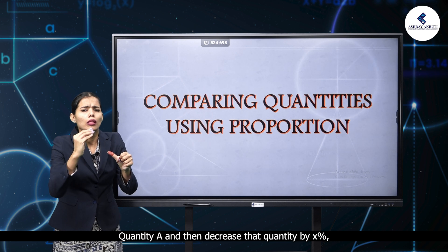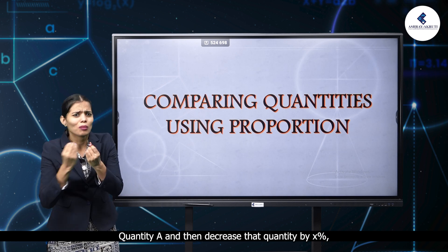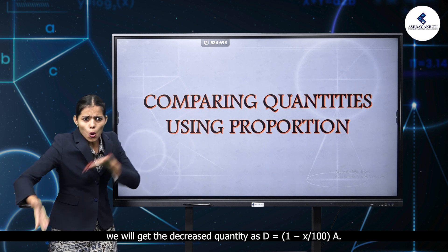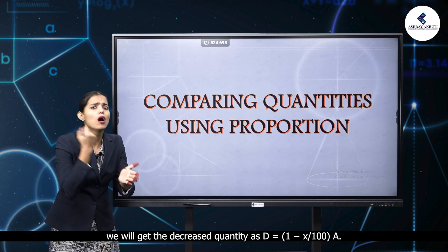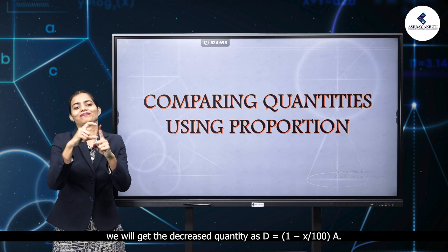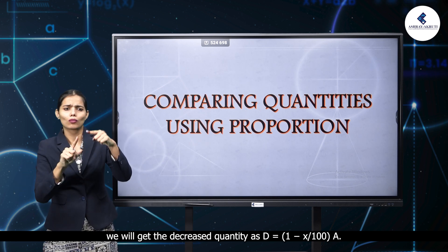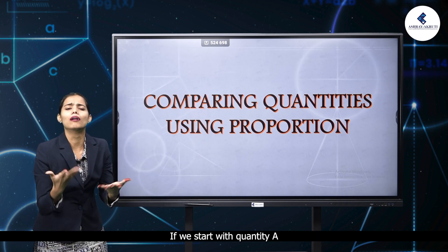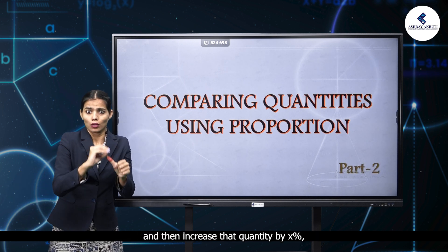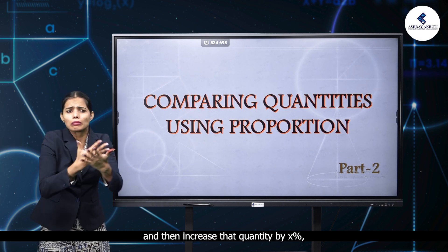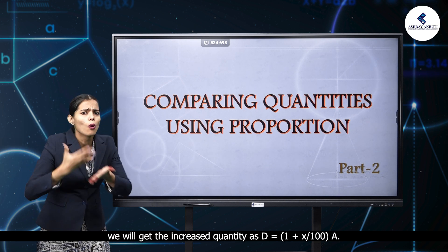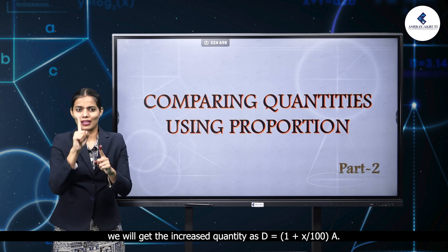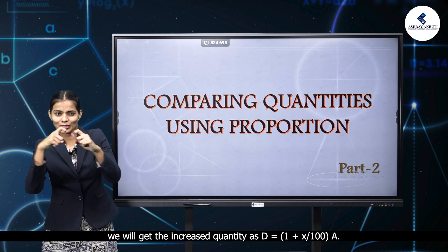If we start with quantity A and decrease that quantity by X percent, we will get the decreased quantity as D is equal to 1 minus X by hundred, into A. If we increase that quantity by X percent, we will get the increased quantity as D is equal to 1 plus X by hundred, into A.